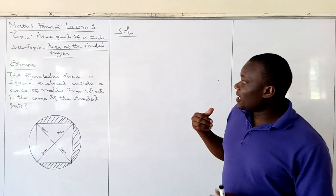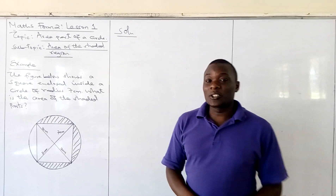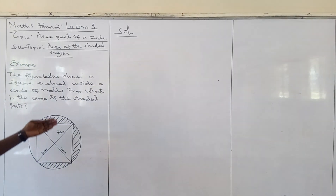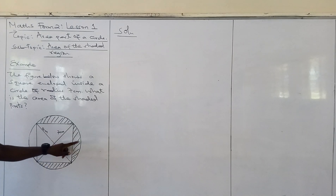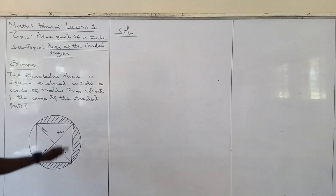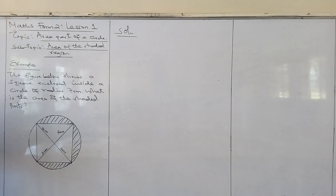We are looking at the area of the shaded region in this particular diagram that I have already drawn for you. The question is: find the area of the shaded part. We have a square that is enclosed inside a circle, and the radius of the circle is given as 7. It is upon us to know the way we are going to calculate the area of the shaded part.